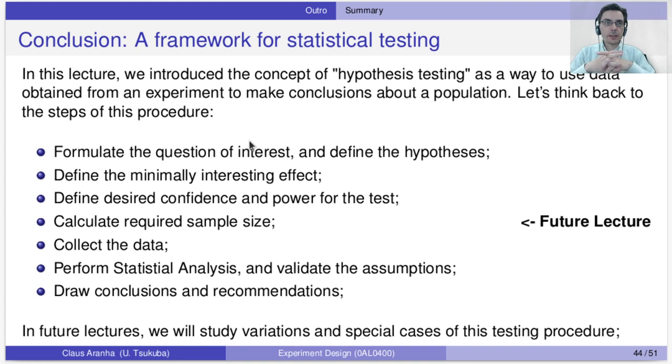In the future lectures, in the next two lectures, we're going to study variations and special cases. Today we saw a very simple case: we have one sample and we want to check one value. Is it equal to this value? Is the mean equal to this value? Or is the mean different from this value? In the following lectures, we're going to discuss some variations and some special cases for this testing procedure. However, it's very important that you understand this lecture. So think about what parts you don't understand and make questions on the survey, on the attendance survey or on the office hours.